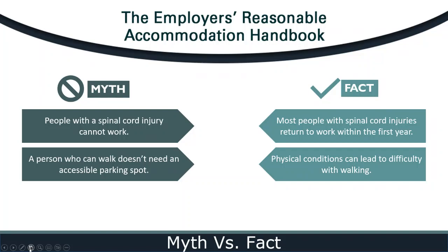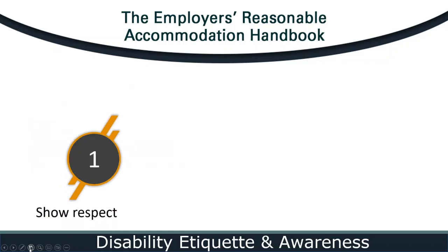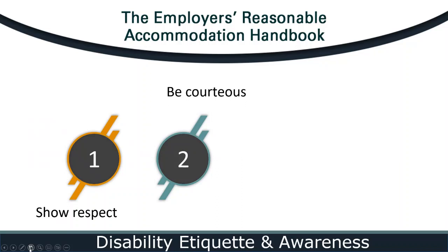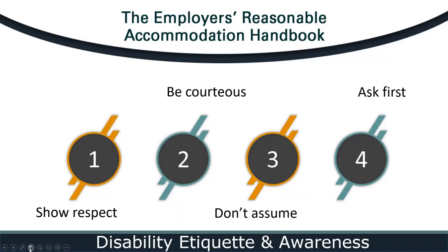Let's move on to some disability etiquette practices. Can you share some general guidelines relevant to interactions with anyone with a disability? Yes, Dustin. We have four simple rules to share. The first is to show respect — people with disabilities are people first, so focus on the person, not the disability. Next, be courteous — this includes respecting a person's personal space as well as the reasonable accommodations they may use to perform the job or access the workplace. Another helpful tip is don't assume — all individuals are unique, with limitations and abilities, so let the person decide what they can do. And finally, ask first — if you think someone needs assistance, ask the person if they need help and, if they do, ask how you can help.